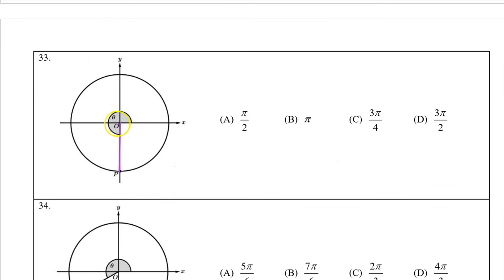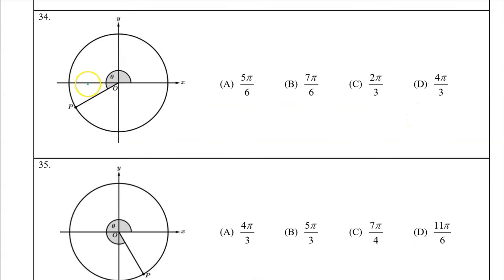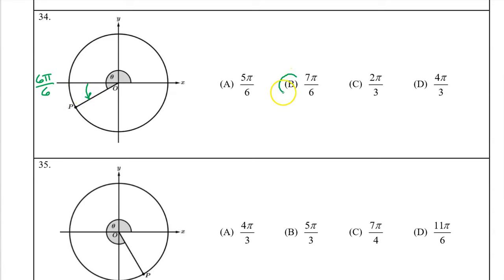In number 33, the terminal ray falls right on the negative y-axis. There is no reference angle in this case, but we know that theta must be a multiple of pi over 2. And we can just sort of count: this is 1pi over 2, 2pi over 2, 3pi over 2. So the answer is D. Number 34, look at that skinny little reference angle — it is clearly less than half of the quadrant. It must be a reference angle of pi over 6. That means theta must be a multiple of pi over 6. Let's think of pi as 6pi over 6. Then we know theta is one multiple past 6pi over 6, so it must be 7pi over 6. And the answer is B.